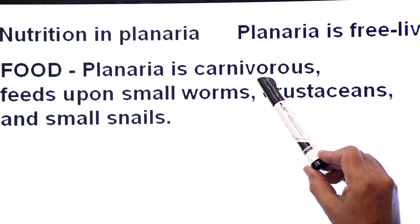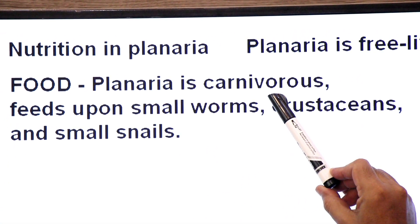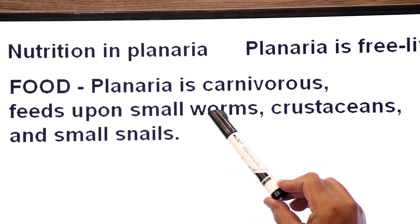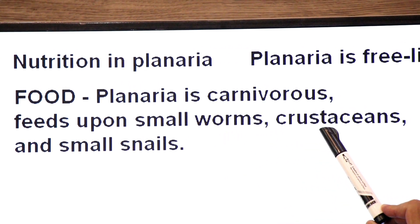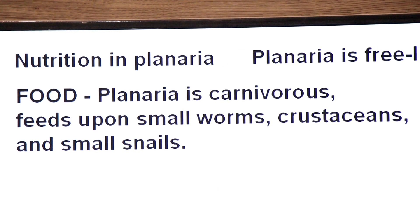Planaria is a carnivorous, meat-eating animal. And it feeds upon small worms, crustaceans, and small cinares.